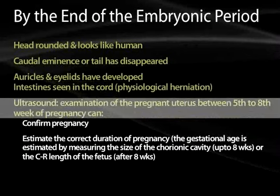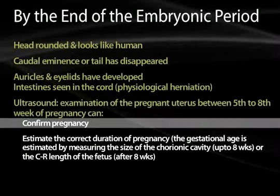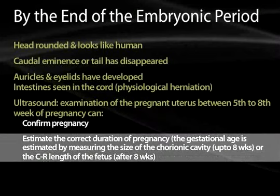Ultrasound exam of the pregnant uterus between the fifth and eighth week of pregnancy helps confirm pregnancy and estimate gestational age, which can be estimated by measuring the size of the chorionic cavity up to about eight weeks. After that period, the crown-rump length of the fetus is used. Going into detailed crown-rump length measurements isn't necessary for Step 1 but will be relevant for specialization later in your careers.